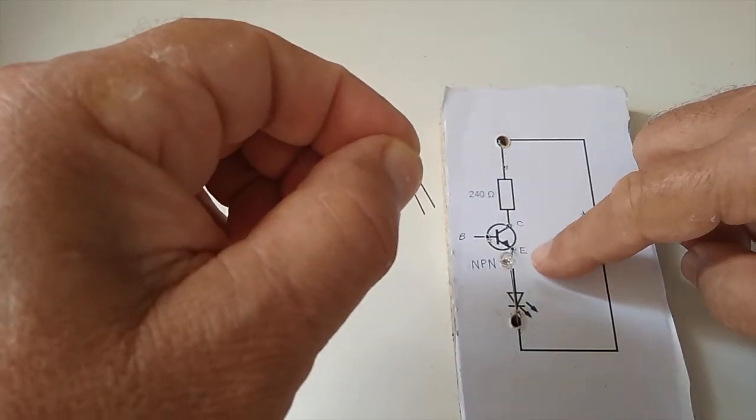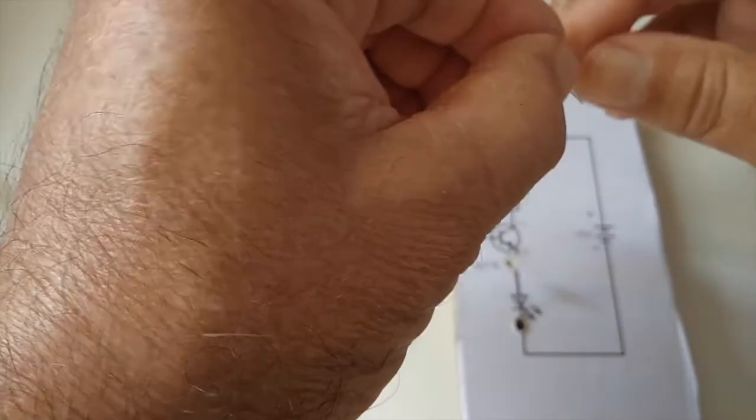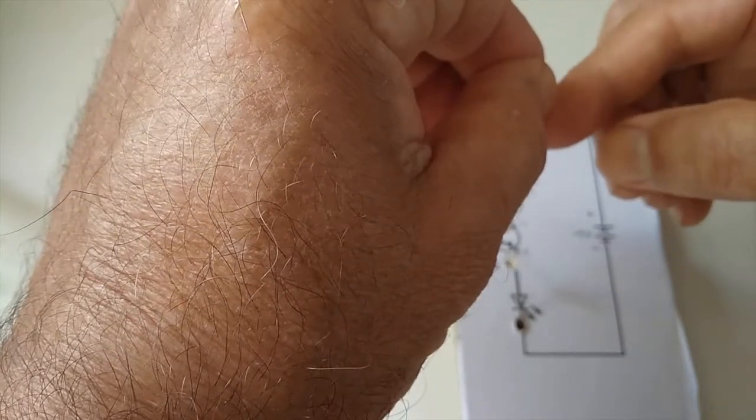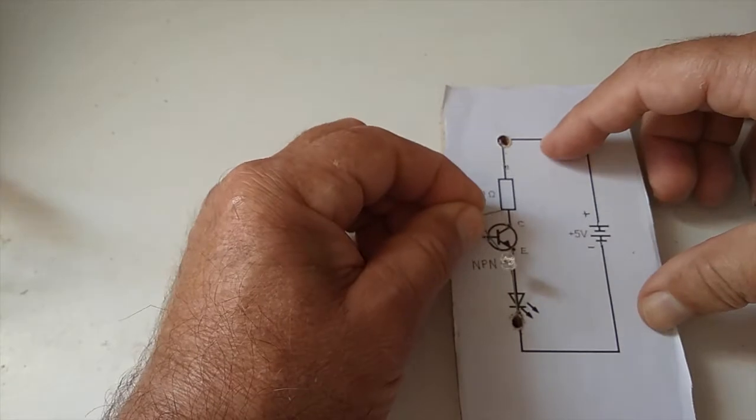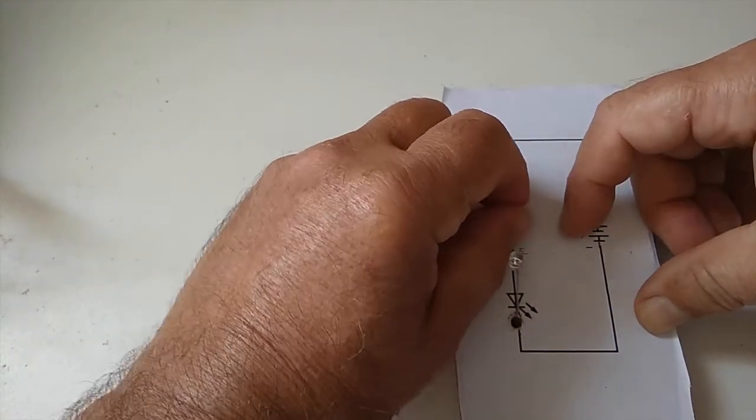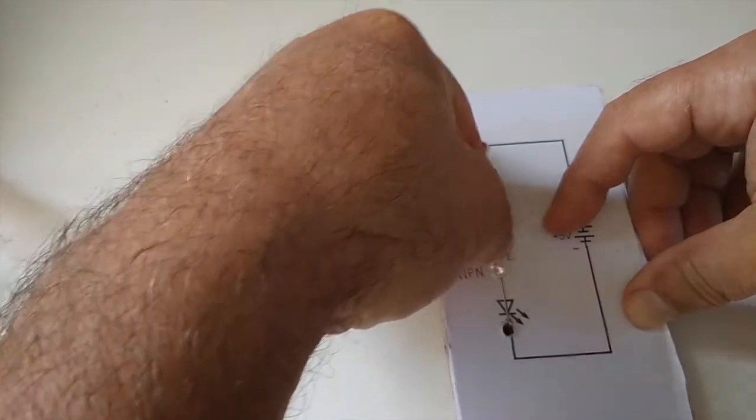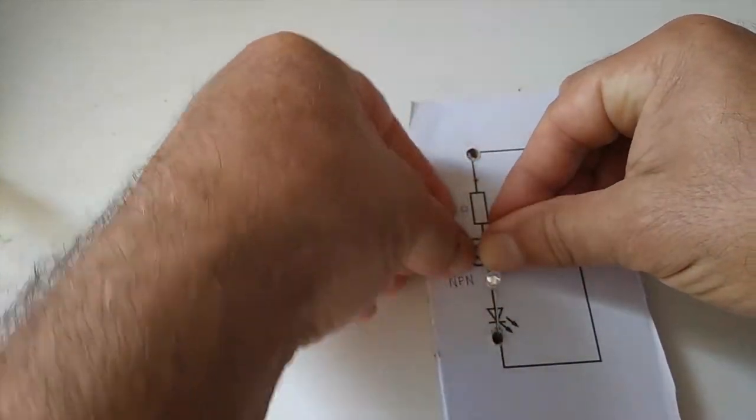Collector, emitter, base. So we're going to stick it so that here's the collector, there's the base, there's the emitter. Do you see how I've spread out those legs? And I've drilled little holes there, there, and that attaches to the same hole as our light emitting diode.